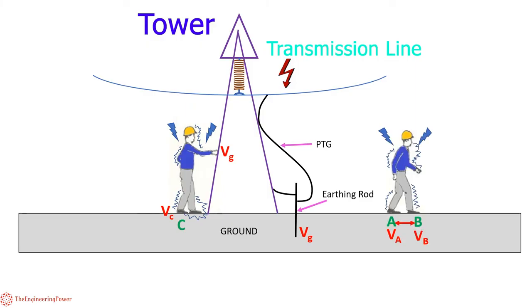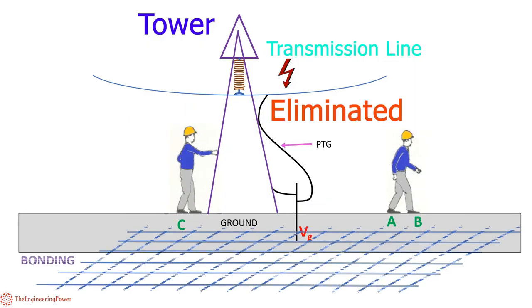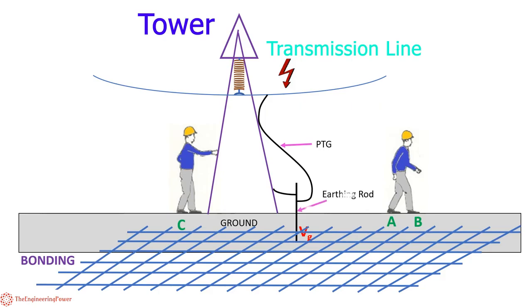Now both of these potentials and electric hazards can be eliminated using bonding. By connecting the earthing rod to the mat or earth mesh provided in the work area, all the earth mesh will be at the same potential, i.e. ground potential VG, thereby eliminating any chance of electric shock.